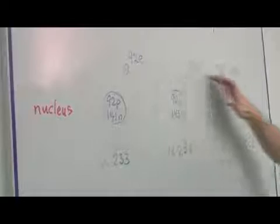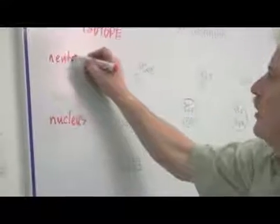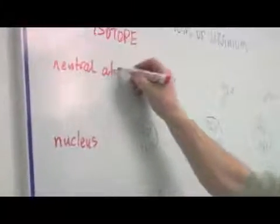I have the surrounding electrons and you'll notice for a neutral atom, there will always be ninety-two electrons.